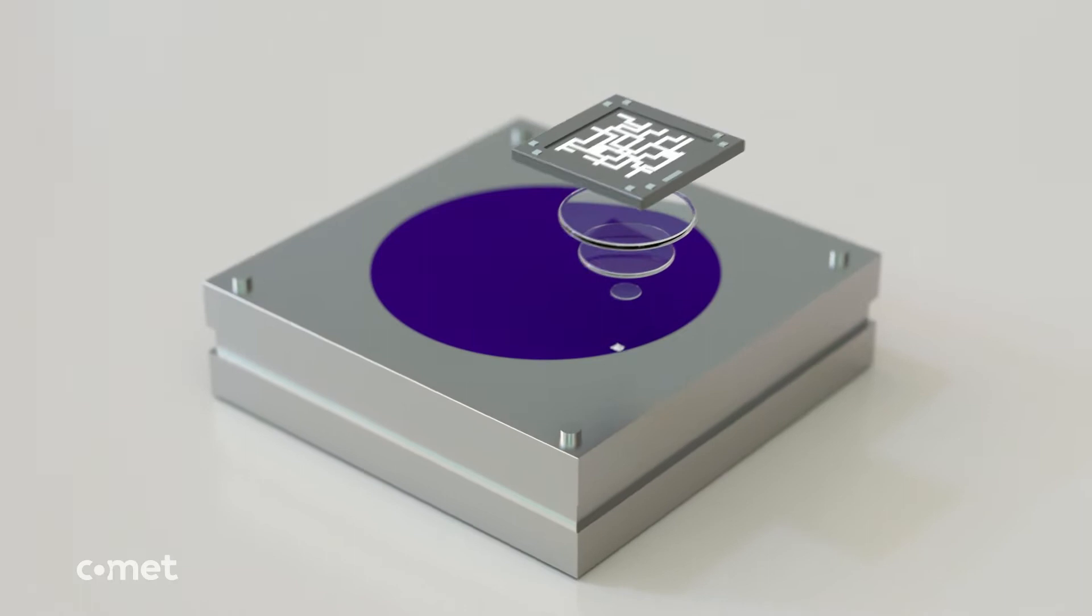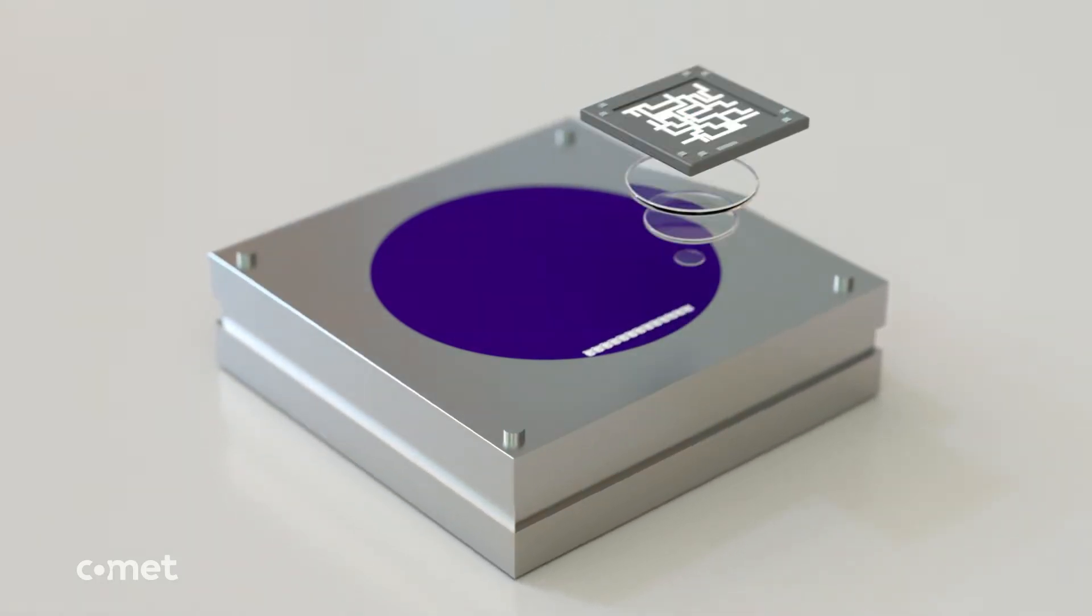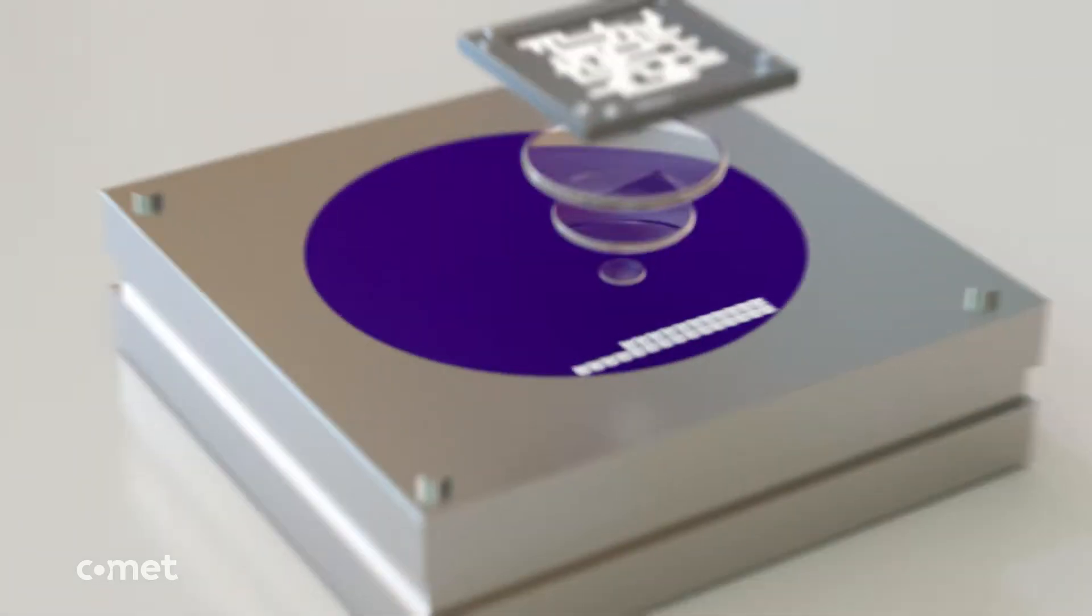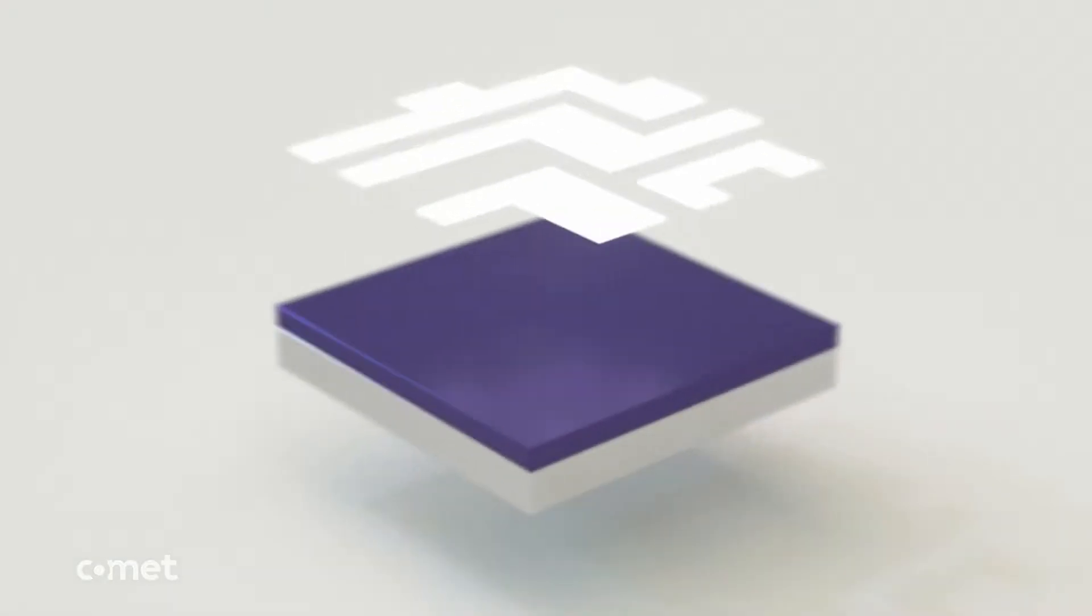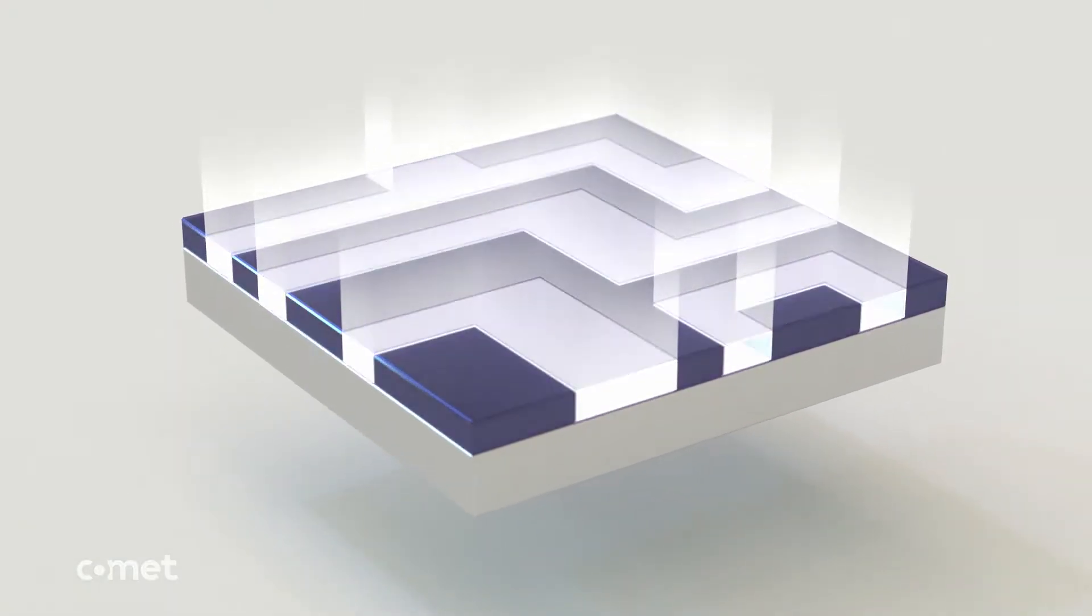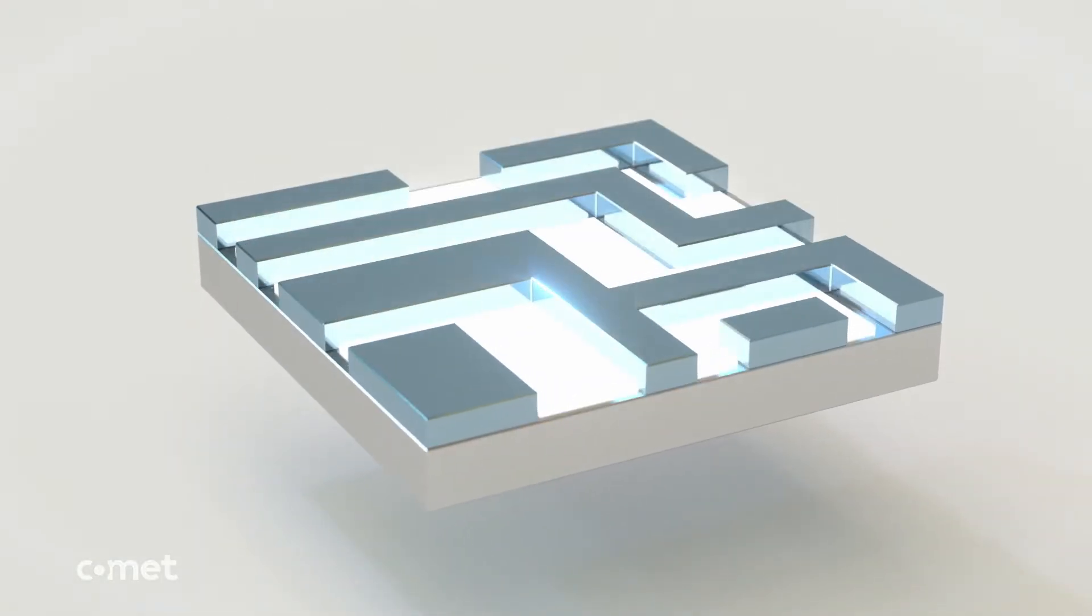A UV light of extreme intensity is directed towards a mask and onto the wafer at an extremely small size. This causes a chemical change in the coating that is exposed to the light.